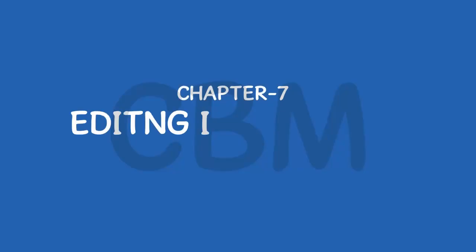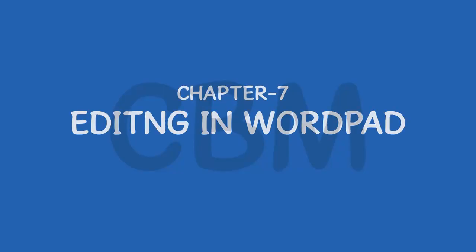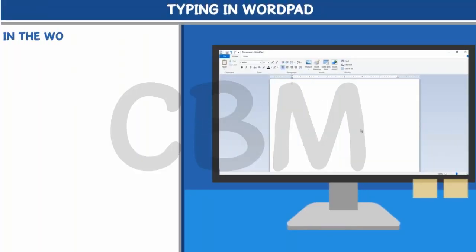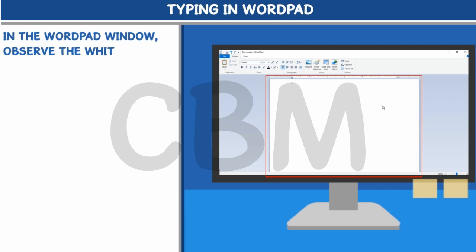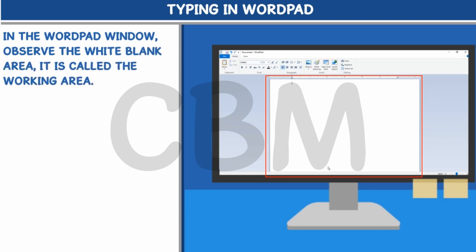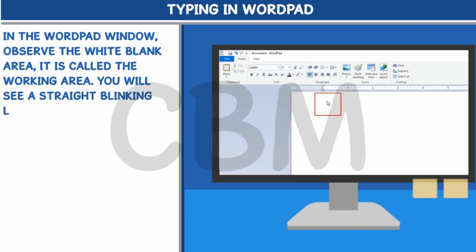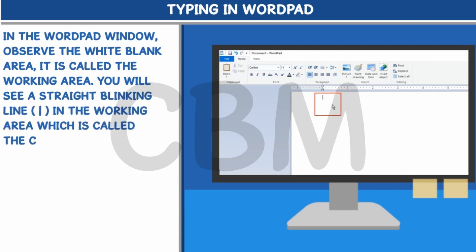Chapter 7: Editing in WordPad. In the WordPad window, observe the white blank area — it is called the working area. You will see a straight blinking line in the working area, which is called the cursor.